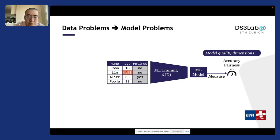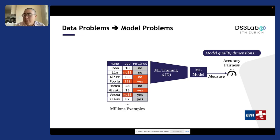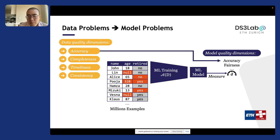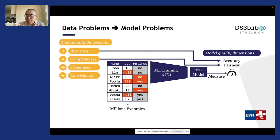In practice, you often have a whole bunch of problems in your data — missing values, wrong values, and many other data issues. Traditionally in data management, we have four dimensions of data quality: accuracy, completeness, timeliness, and consistency. There is actually an interesting mapping between data quality and model quality. If your data is not accurate enough, your model quality will likely suffer. If your data is not complete — meaning you are missing a certain population — it's entirely possible your model will not be fair at all.